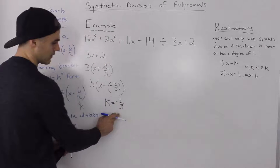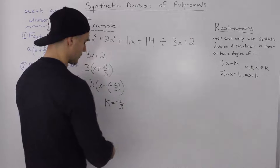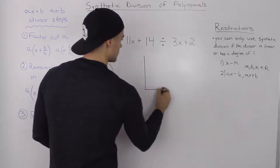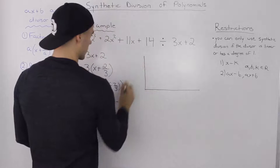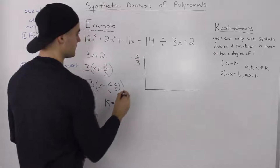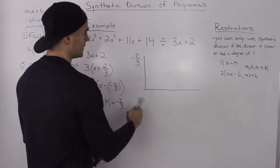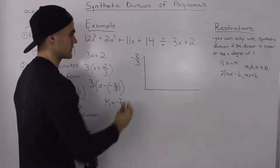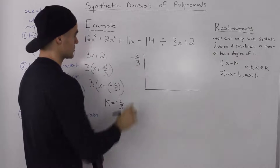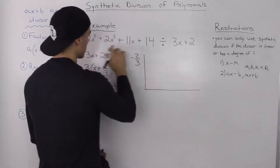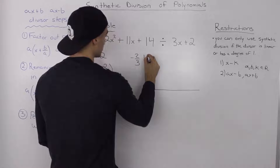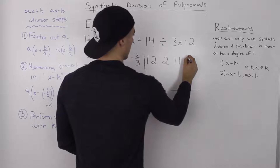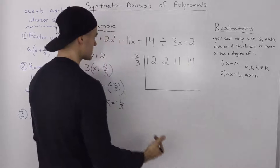Going back to our specific example, we have our k value of negative 2 over 3, and now we perform synthetic division on the dividend with that k value. We draw the chart: our k value of negative 2 over 3 goes in the corner — and note that whenever we have an ax plus b or ax minus b divisor, the k value will always be a fraction. Then we write out the leading coefficients of the dividend: 12, 2, 11, and 14.